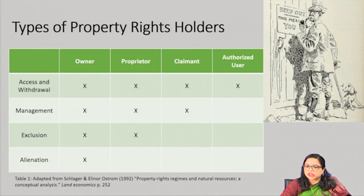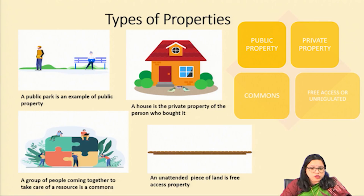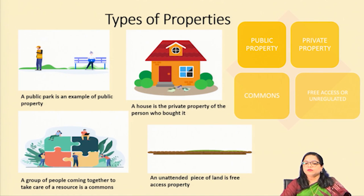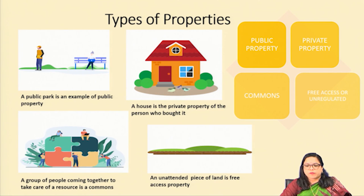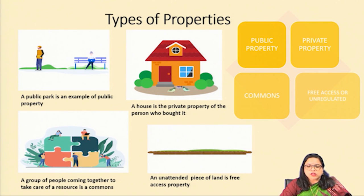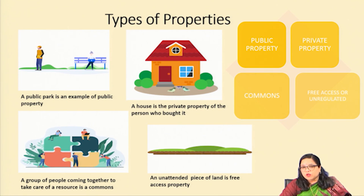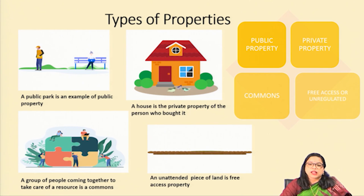Having discussed property rights and different rights associated with them, let us examine natural resources and their governance. Natural resources can be managed as public property, private property, commons, and as free access or unregulated property. Though the distinction is not always watertight, we might encounter some resources which have features from each domain. We will specify resources through property rights that govern them, their ownership and usage, to make it clearer.